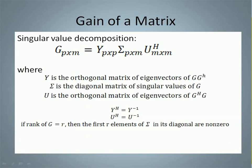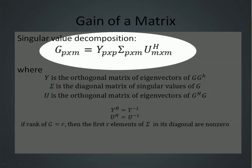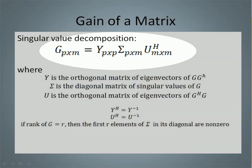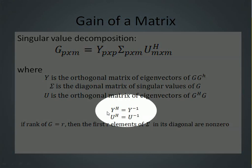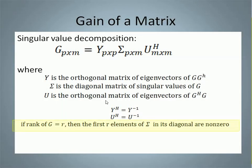We couldn't leave this topic without mentioning the singular value decomposition. We can express any matrix as the product of three matrices: V is the orthogonal matrix of eigenvectors of G·G^H; big sigma is the diagonal matrix of singular values of G; and U is the orthogonal matrix of eigenvectors of G^H·G. Big sigma will have r non-zero singular values, where r is the rank of G.